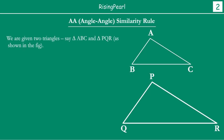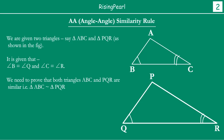First we draw the two triangles ABC and PQR. We note what is given to us: angle B is equal to angle Q, and angle C is equal to angle R. This is what is given to us. And we need to prove now that the two triangles are similar — we have to show these two triangles are similar.